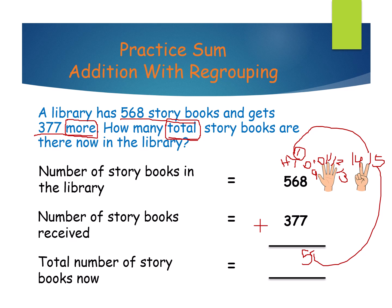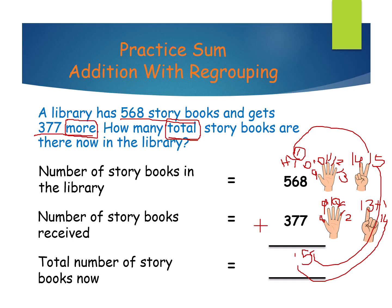Now in the tens place, the digits are 6, 7 and 1 carry over. 7 is the biggest number, so keep 7 in your mind and open 6 fingers. 8, 9, 10, 11, 12 and 13. Then plus 1 carry over — 13 plus 1 equals 14. 4 goes under the tens place and 1 goes to the top of the hundreds digit.